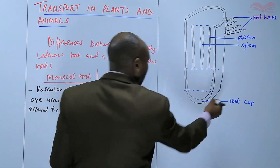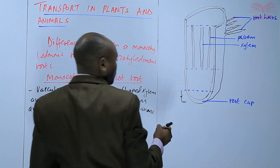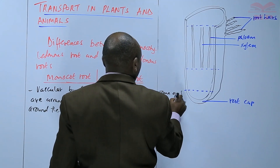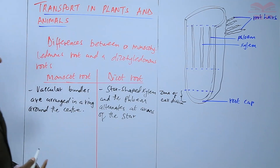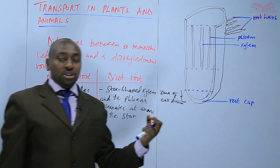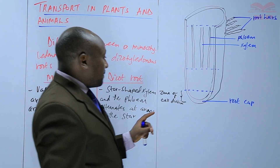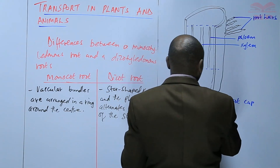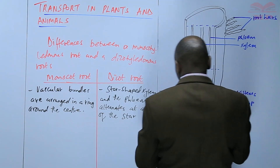The first zone, which is at the tip, we refer to as the zone of cell division. That is where the cells are actively dividing, and that is what brings about the lengthening of the root — the root becomes longer. The cells in this region are dividing, and the type of cells found there are referred to as meristems.